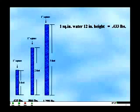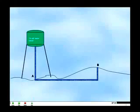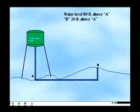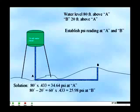To illustrate this principle, this water tower is 80 feet high. Using the formula discussed previously, water pressure at the base of the tower will be 34.6 PSI: 80 times 0.433 equals 34.6. However, the PSI at point B will be 25.9 PSI: 60 times 0.433.